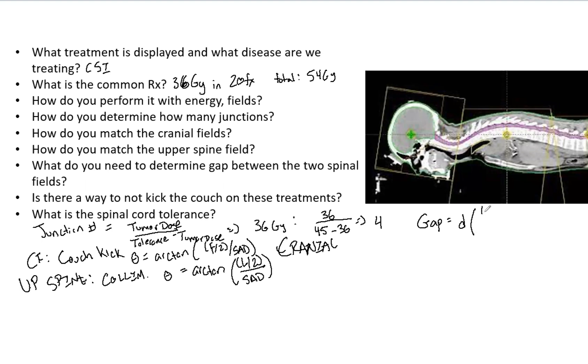Now the gap is going to be equal to D times (L1 over 2 divided by SSD1)—now remember, this isn't SAD like it was before, this is SSD—plus (L2 over 2 divided by SSD2). That is going to give us our gap. This D is the depth of the point of interest that we want to treat.